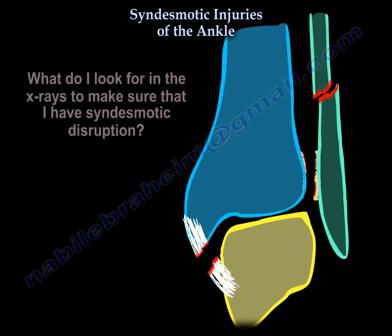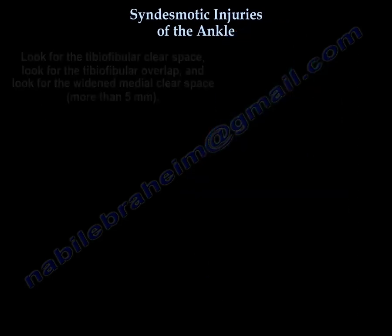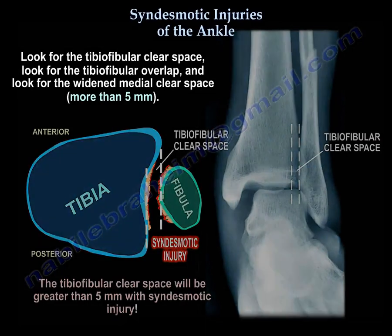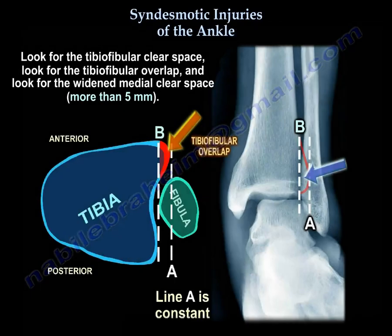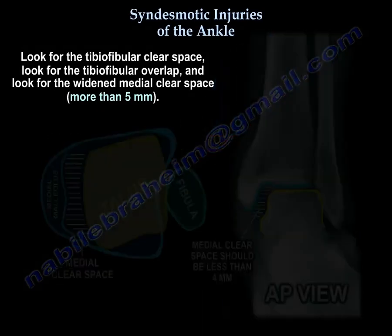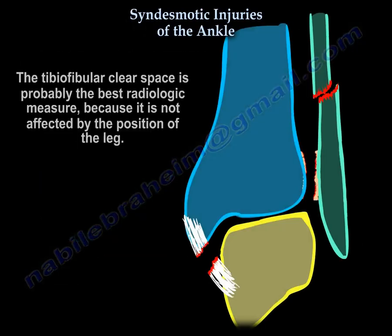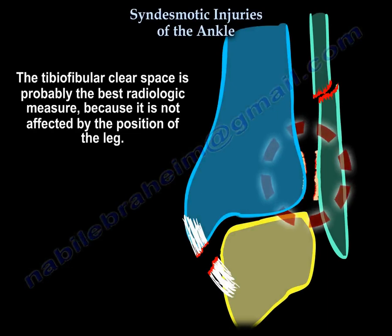What do I look for in the x-rays to make sure I have syndesmotic disruption? Look for the tibiofibular clear space. Look for the tibiofibular overlap. And look for a widened medial clear space of more than 5 mm. The tibiofibular clear space is probably the best radiologic measure because it is not affected by the position of the leg.